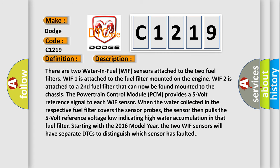There are two water-in-fuel WIF sensors attached to the two fuel filters. WIF-1 is attached to the fuel filter mounted on the engine. WIF-2 is attached to a second fuel filter that can now be found mounted to the chassis. The powertrain control module PCM provides a 5-volt reference signal to each WIF sensor.